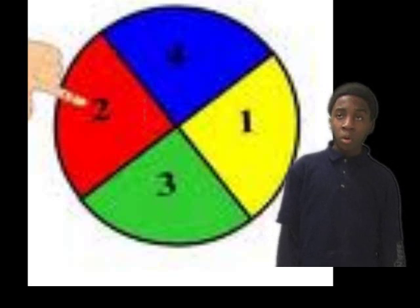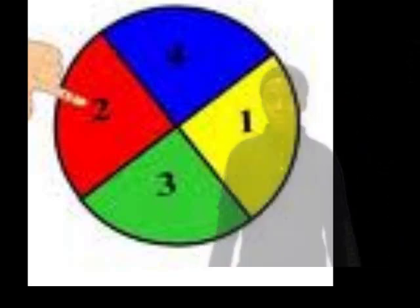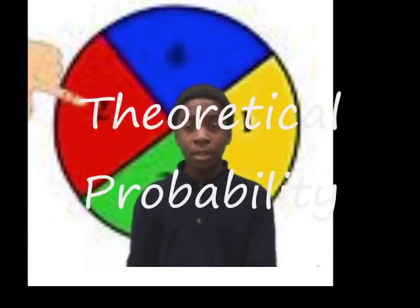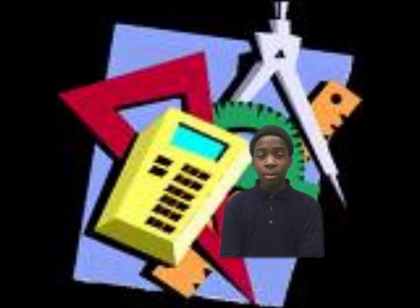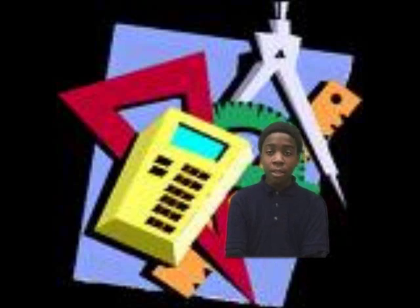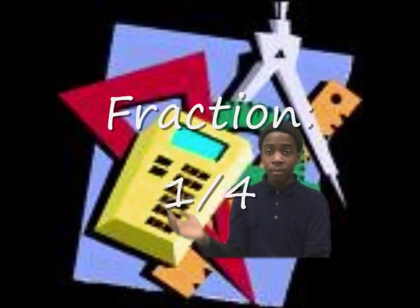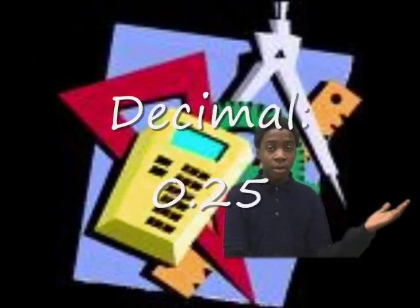Let's have another example. When I spin this spinner, I have a one in four chance of landing on the section with a red A on it. Let's spin it. Theoretical probability is a probability of an event that will happen over a total number of possible outcomes. A one out of four chance can be written in three ways: as a fraction, one fourth; as a decimal, twenty-five hundredths; as a percent, twenty-five percent.